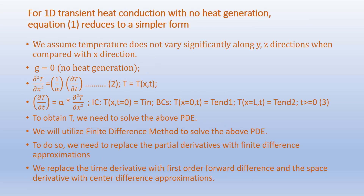For 1D transient heat conduction with no heat generation, the equation reduces to a simpler form. We assume temperature does not vary along y and z directions compared to x. Since there is no heat generation term, g = 0. Accordingly we get d²T/dx² = (1/α)(dT/dt), where T is a function of x and time t. Rearranging: dT/dt = α · d²T/dx².